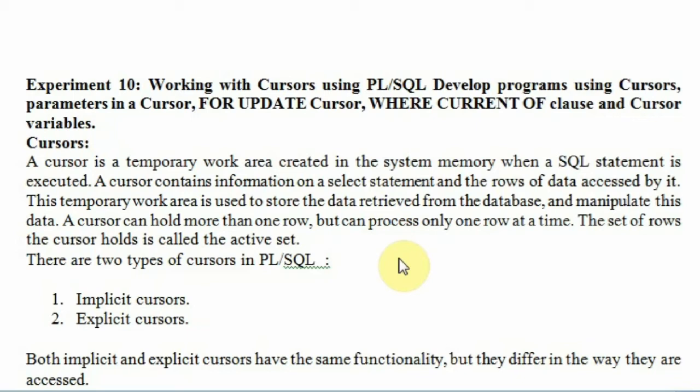So what happens is I will be getting only certain results — not the entire table but a part of it, which can be one row, two rows, multiple rows, or no data at all. This result will not be there in the database; it is stored in the temporary work area. And you can apply some operations on the result — that mechanism is the cursor's mechanism.